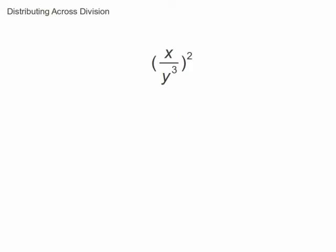When you distribute an exponent across a division problem, it distributes to every factor in the numerator and the denominator. Again, simplify by applying the power to a power rule.